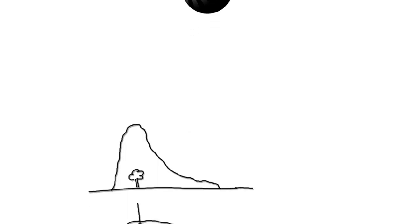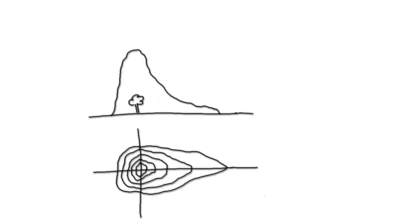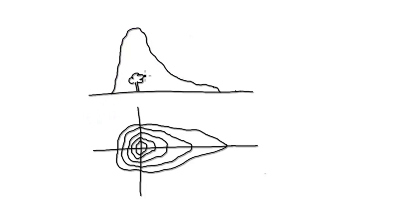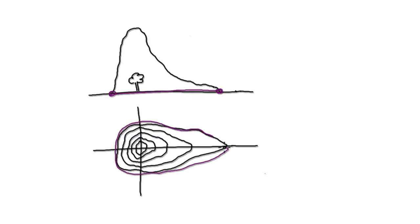In this video I'm going to introduce you to level curves. Here you've got a mountain and you're looking at it from the side. The center of the universe is this tree here, so that tree is located at the origin. Ground level, where the elevation is zero, corresponds to this curve on this diagram.